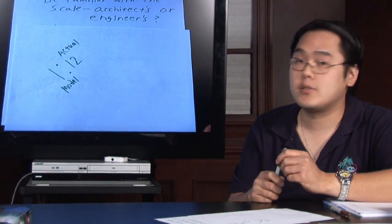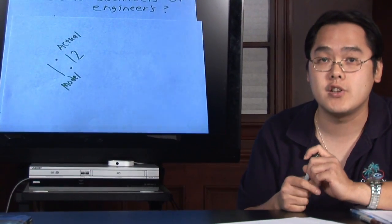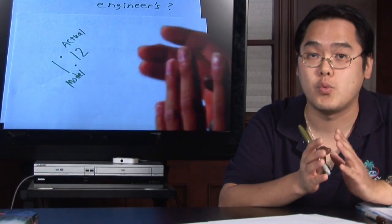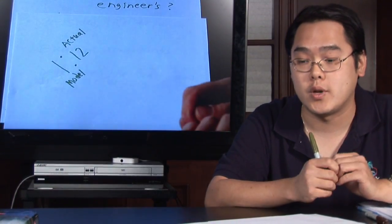There are two kinds of scales, an architect's scale and an engineer's scale. And each scale is going to have different kinds of markings. So you just want to be sure as to what scale you want to use.